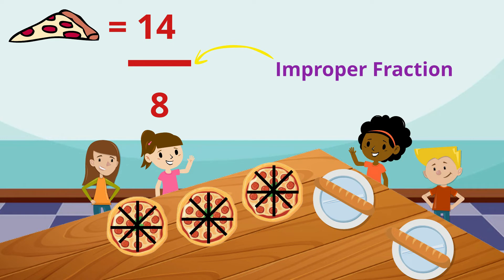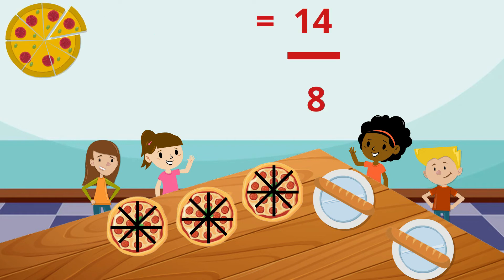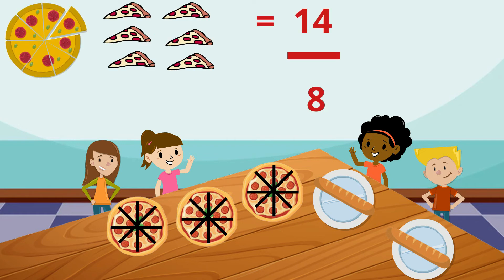Since there are 8 pieces in a whole pizza, the improper fraction 14 eighths means one whole pizza of 8 parts and 6 extra parts of a second pizza.